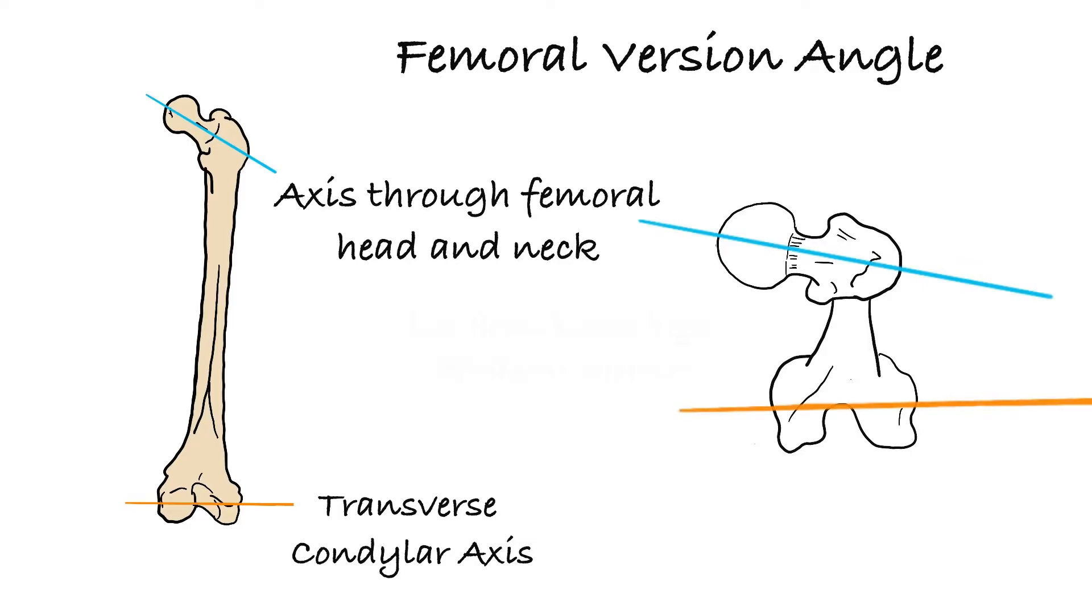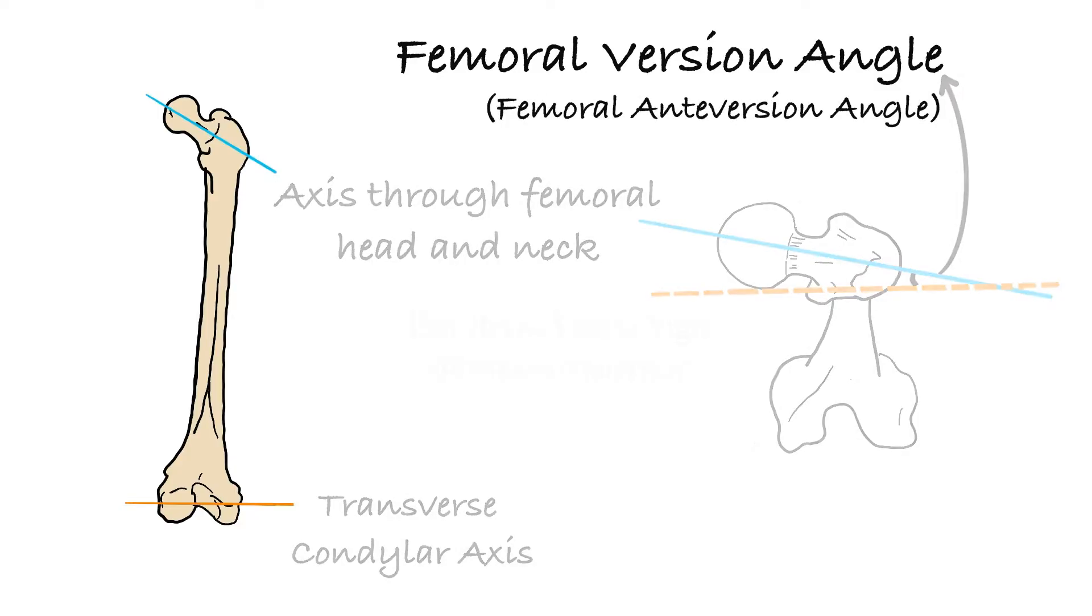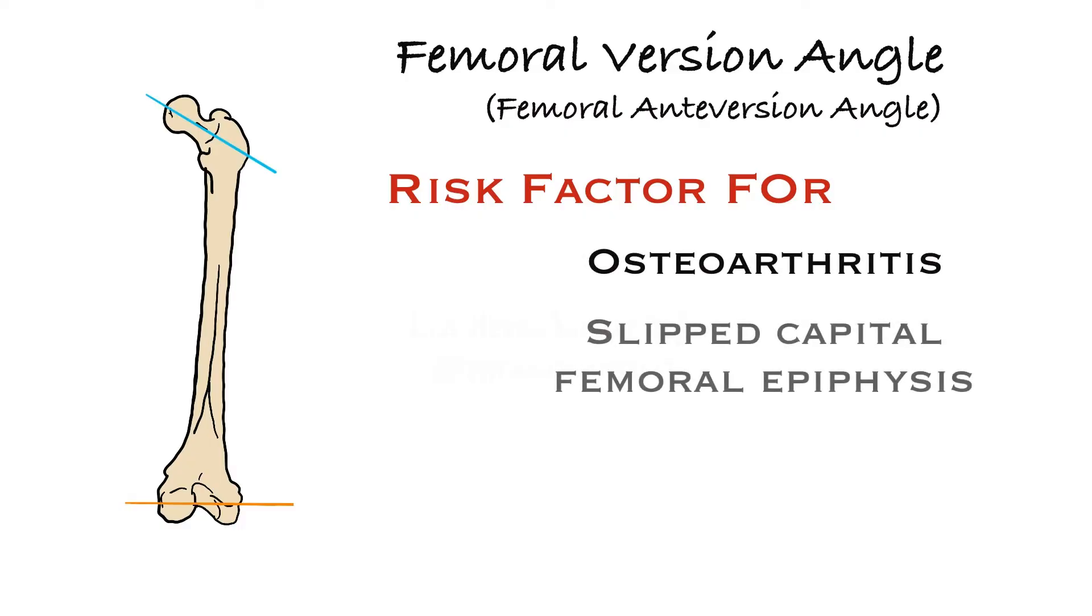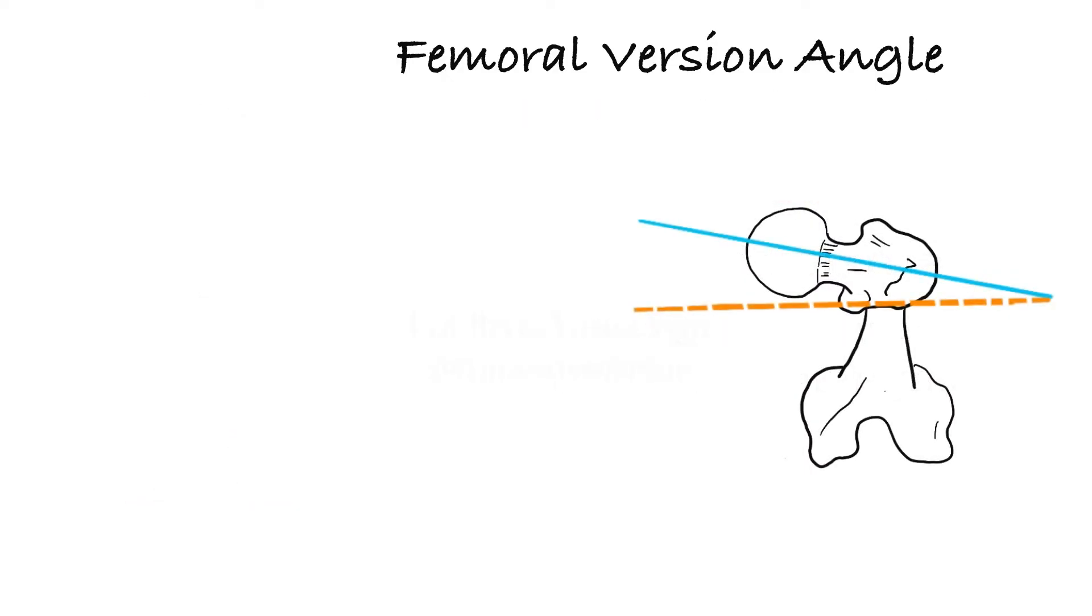Transcondylar axis shows the degree of twist, torsion of the femur. So femoral version affects the gait. It is a risk factor for clinical diseases such as osteoarthritis or slipped capital femoral epiphysis. Normal degree of this angle is between 8 to 15 degrees as I mentioned before.